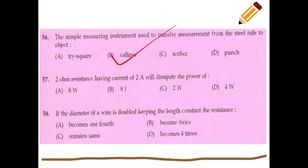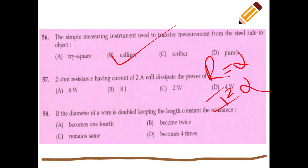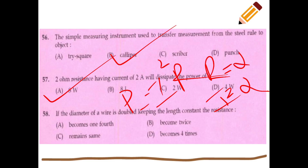A 2-ohm resistance carrying a current of 2 amperes will dissipate power of P = I²R = 2² × 2 = 8 watts. Wait — substituting: 4 × 2 = 8 watts. The answer is 8 watts.